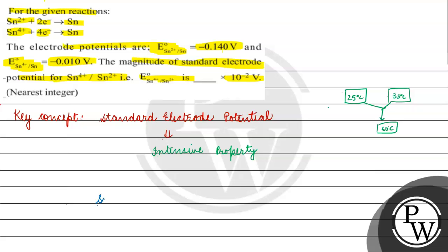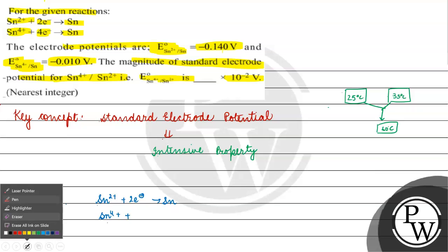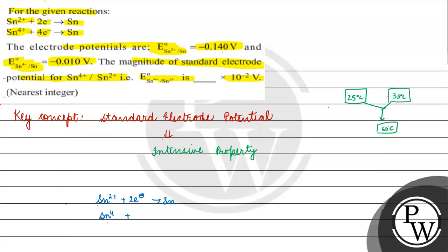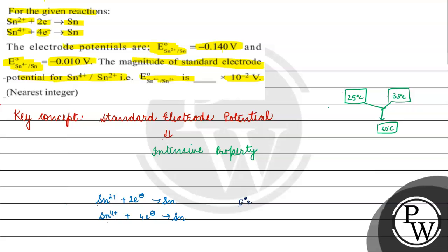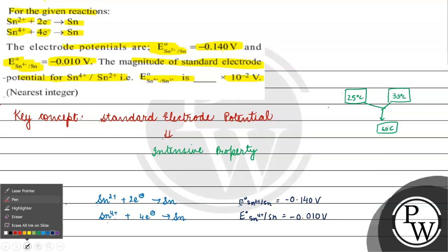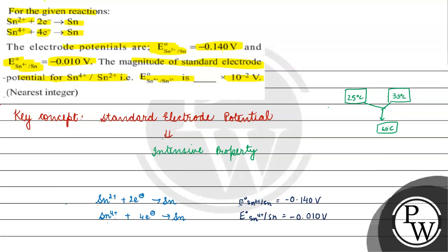Now, this is our first reaction and another reaction is something like this. For the first reaction we have E° of Sn²⁺/Sn = -0.140 V. For the second reaction, E° of Sn⁴⁺/Sn = -0.010 V. What we need is Sn⁴⁺ from Sn²⁺.